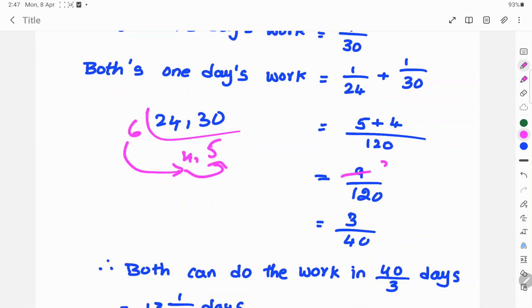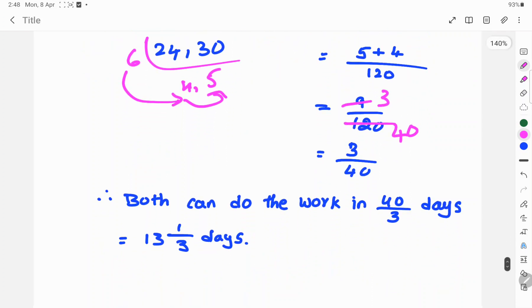Here cancels 3 table, into 3 is 40 days. 3 by 40. Both can do the work in 40 by 3 days. That is 13 and 1 by 3 days.